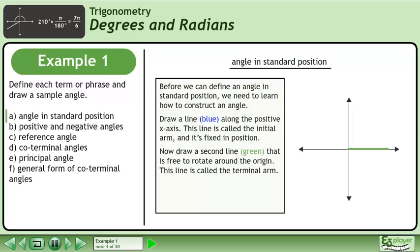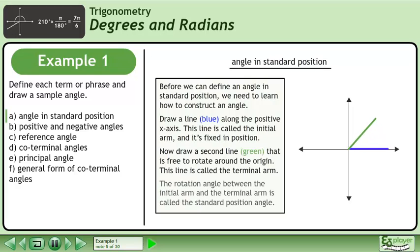Now draw a second line in green that is free to rotate around the origin. This line is called the terminal arm. The rotation angle between the initial arm and the terminal arm is called the standard position angle.